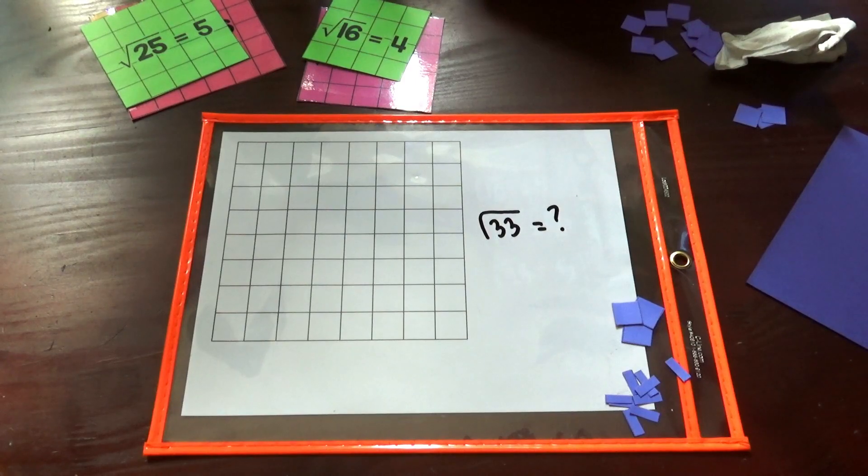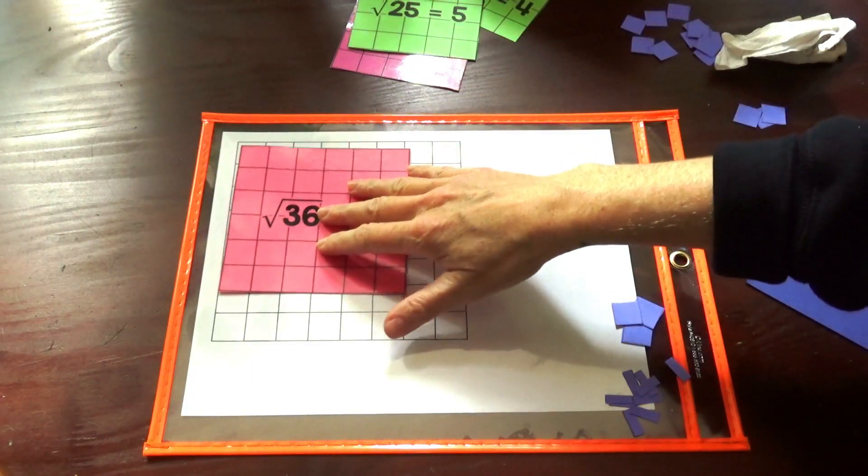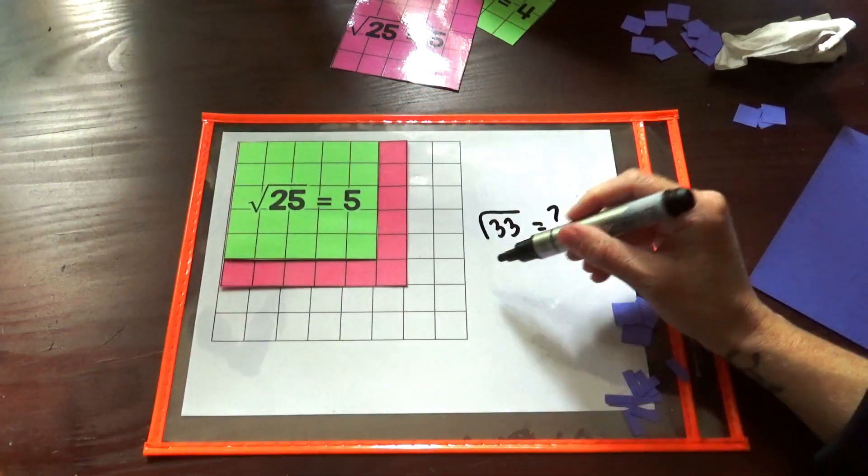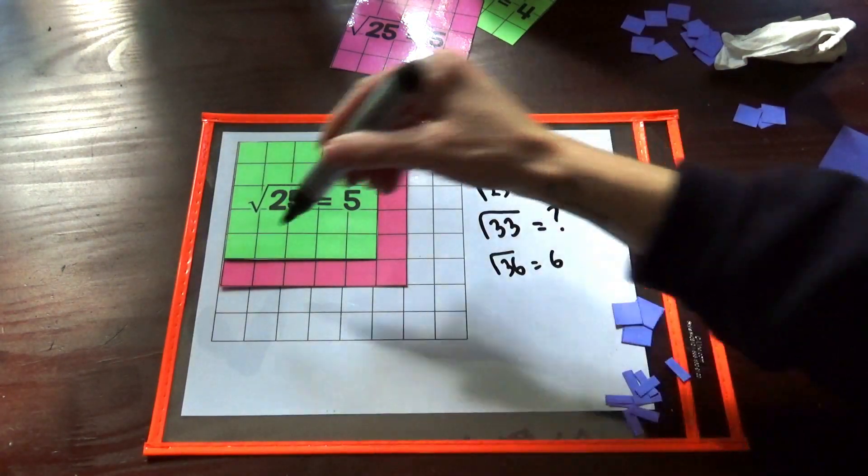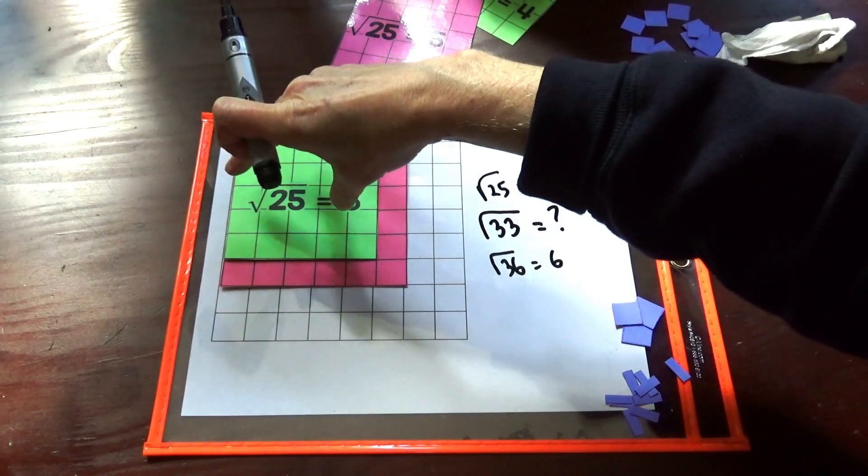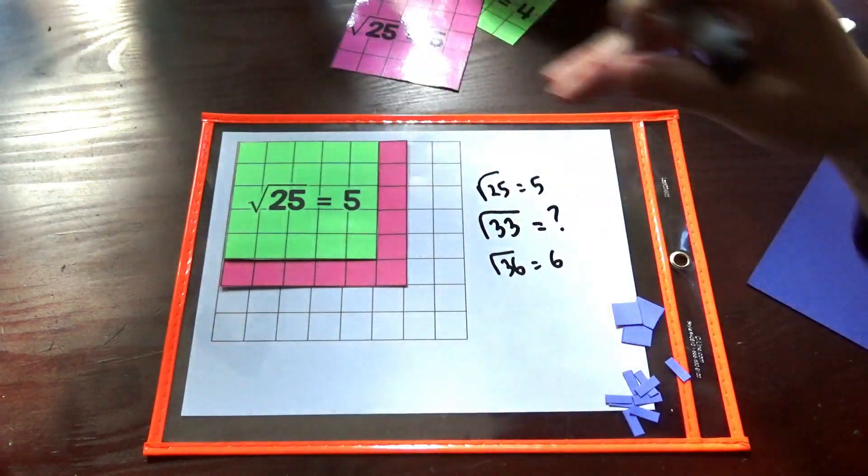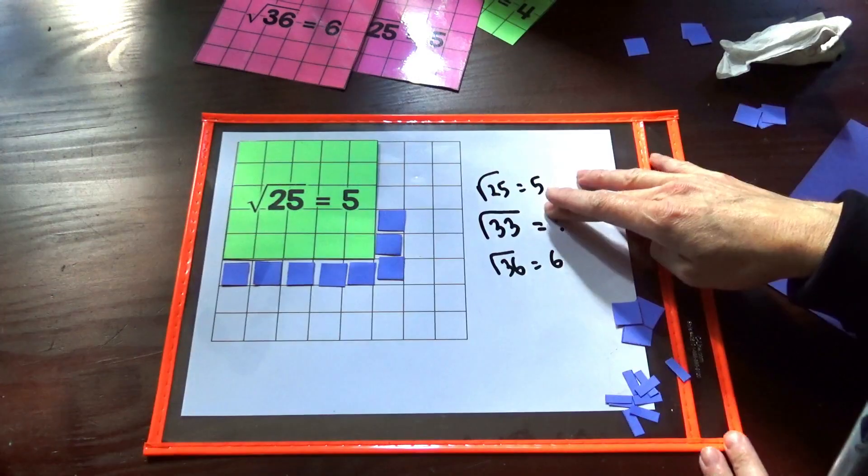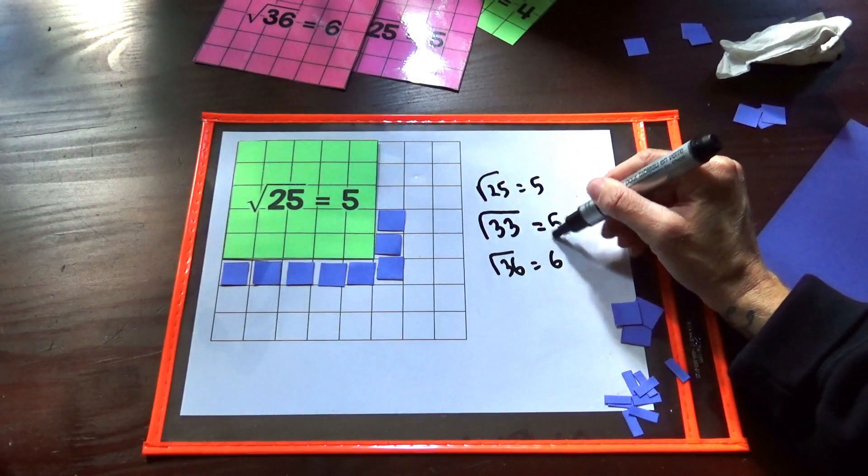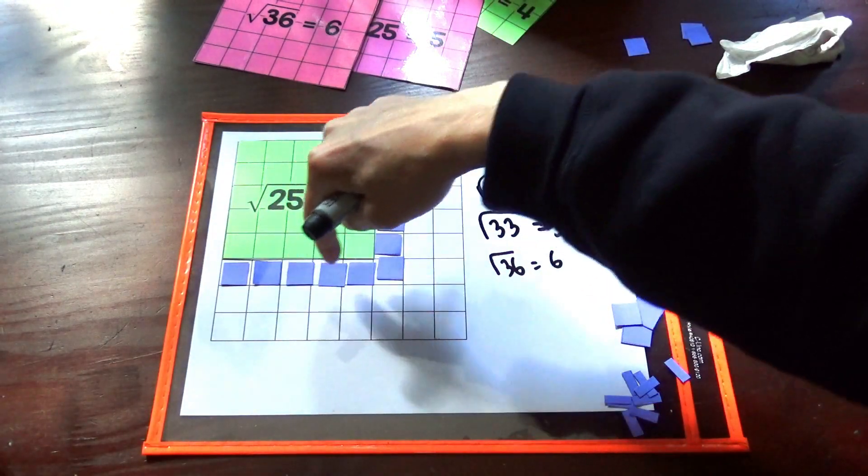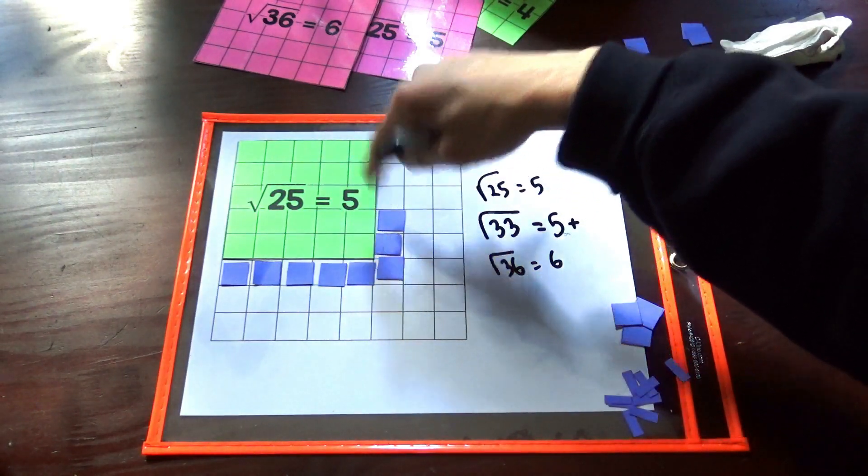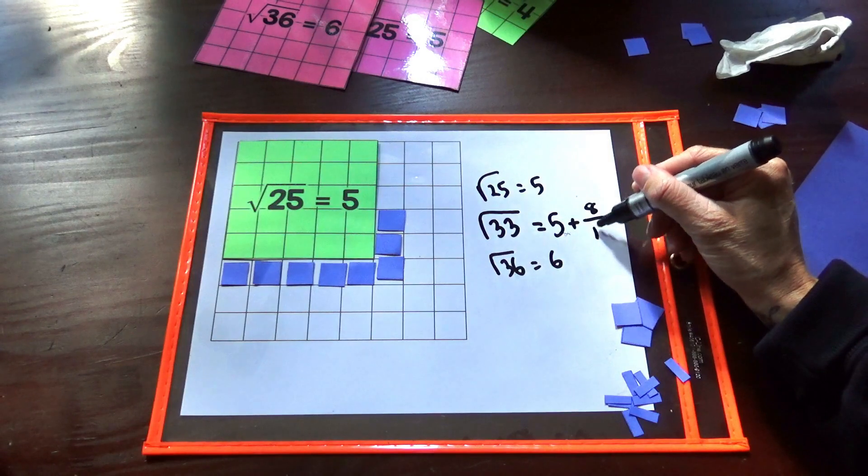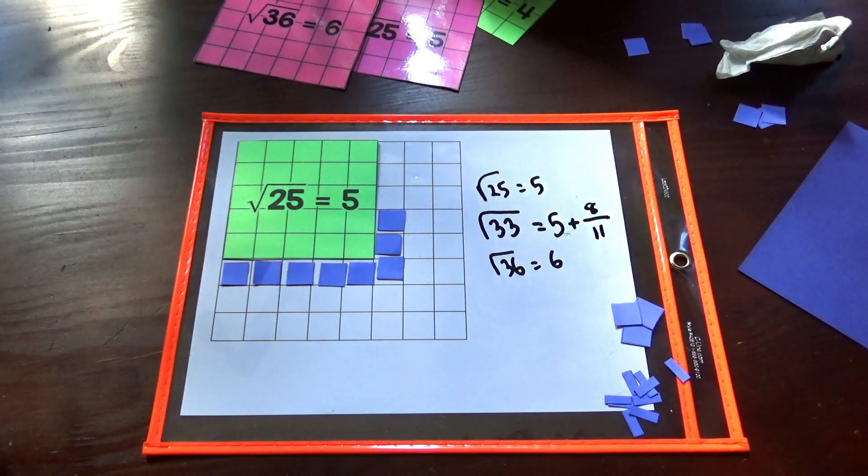So let's look at the square root of 33. The square root of 36 is 6 and 25 is 5. And there's 11 spaces to go from 25 to 36. So we know that we have 5 and 1, 2, 3, 4, 5, 6, 7, 8 out of the 11 spaces it would take to get to the square root of 36.